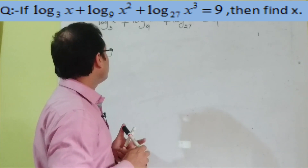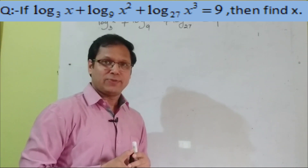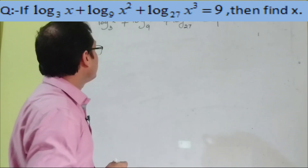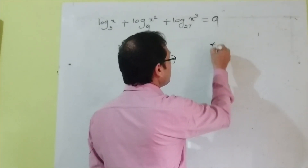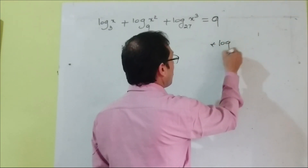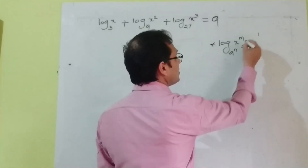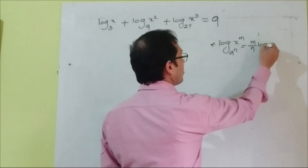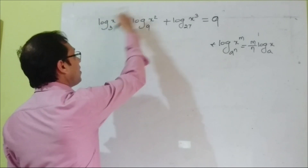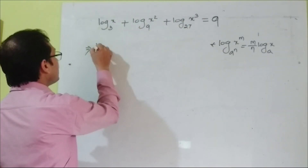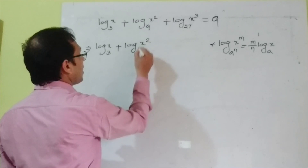Next question: log x to the base 3 plus log x² to the base 9 plus log x³ to the base 27 equals 9. Find the value of x. This looks difficult but is simpler using the property: log x to the power m to the base a to the power n equals m/n log x to the base a. Note that 9 = 3² and 27 = 3³, so all logarithms can be converted to base 3.